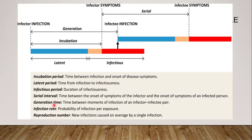Now, generation time is the time between the moments of infection of an infector-infectee pair. This is the time between when the infector was infected and when the infectee becomes infected — i.e., when the infection passes from one person to another. The latent period, marked in blue in the diagram, is the time from infection to infectiousness — that is, from the entry of the agent until the host becomes infectious to others.